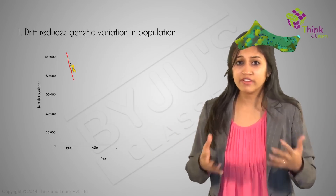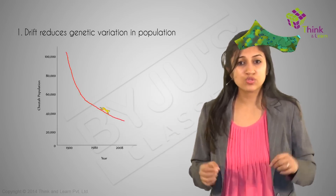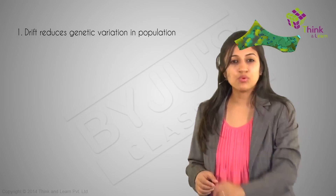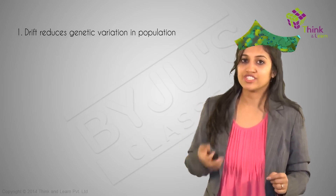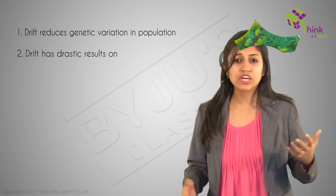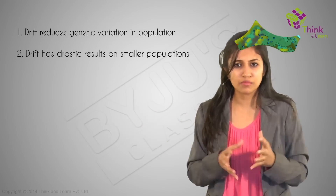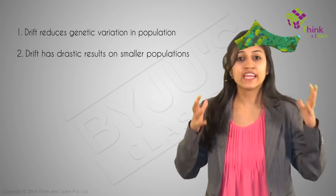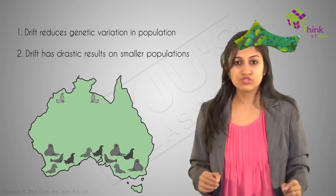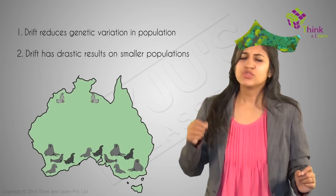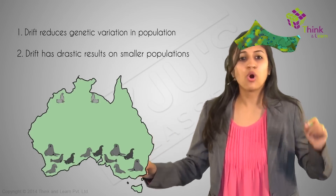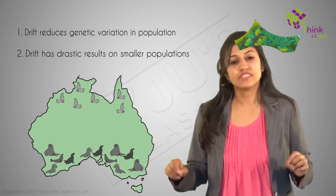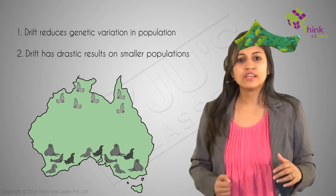Cheetahs, for example, have very little variation — this species has been reduced to a very small number in recent times, and because it lacks genetic variation, it is in greater danger from infectious diseases. Genetic drift acts faster and has more drastic results in smaller populations; small populations usually become extinct. For example, in the 1800s, hunting reduced the northern elephant seal to just 20 individuals. Although the population has rebounded now, its genetic variability is much lesser than that of the southern elephant seal.